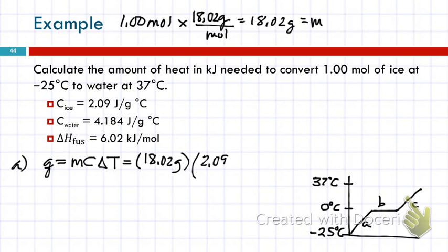2.09 joules divided by grams, degrees Celsius. Write the units in there, because they're going to alert you to possible issues you might have. So, the grams cancel, so that's nice. And then, I need delta T. Delta T is the final minus the initial. So, for A, I'm ending at zero, and I started at minus 25. I'm subtracting negative 25. So, what is that? Positive 25. So, delta T is 25 degrees Celsius.